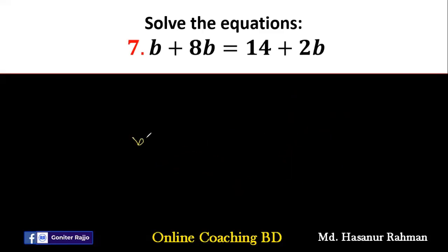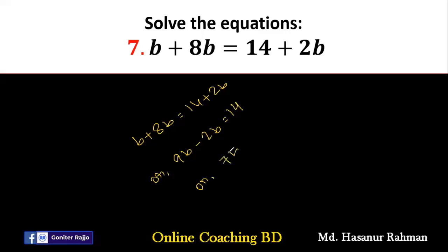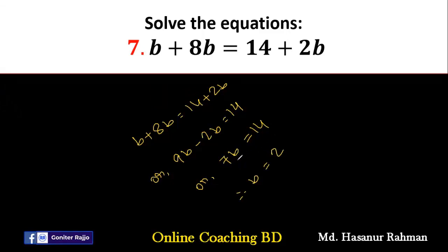Now number 7. Number 7 says b plus 8b equal to 14 plus 2b. b plus 8b is 9b. We move 2b to the other side, giving minus 2b. So 9b minus 2b is 7b, equal to 14. Dividing by 7: 7 divided by 7 is 1, and 14 divided by 7 is 2. So the final answer is b equal to 2.